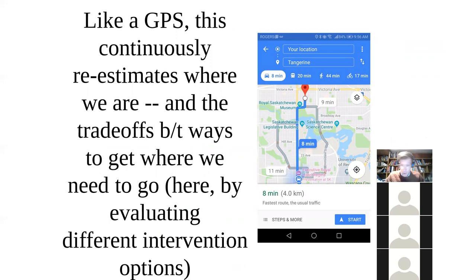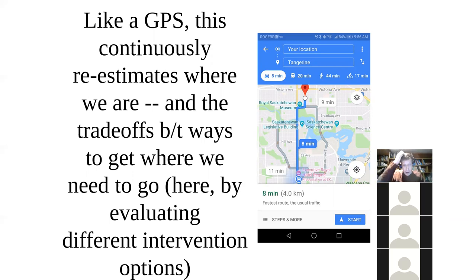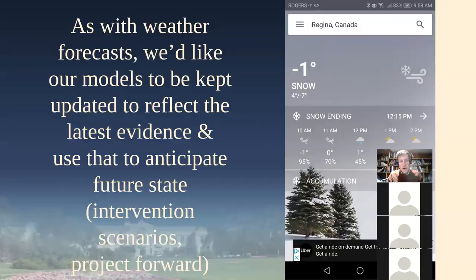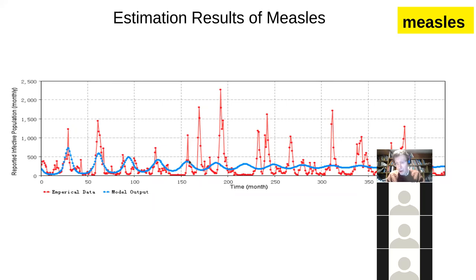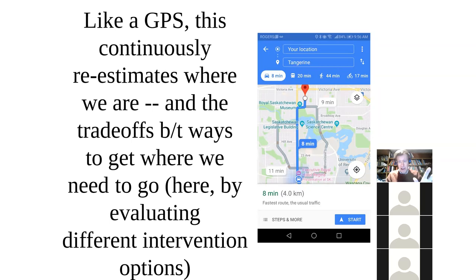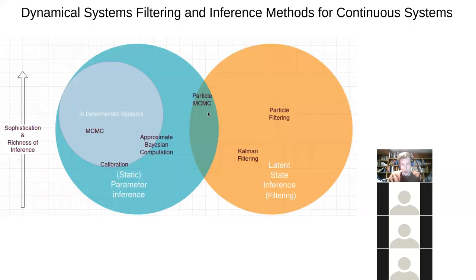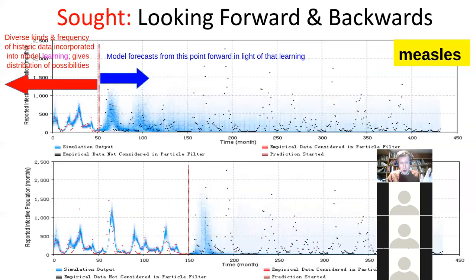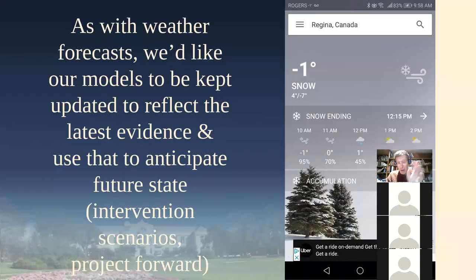The magic of a GPS is that when you miss your exit or it's closed due to a street fair or construction, it reroutes you to your destination. It's always giving fresh estimates on how to get to where you want to go. It's constantly re-estimating where we are right now and in light of that, how we get to our destination. That's what our models will be able to do — powered by Kalman filtering, particle filtering, or particle MCMC — constantly cluing in to a situation that's changed out from under us.